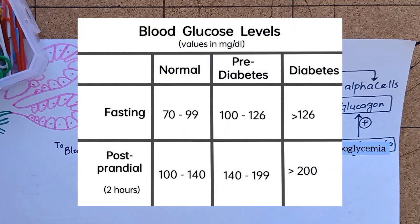Here is a table showing normal values of blood glucose in fasting and post-prandial states.